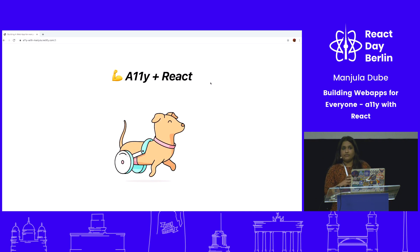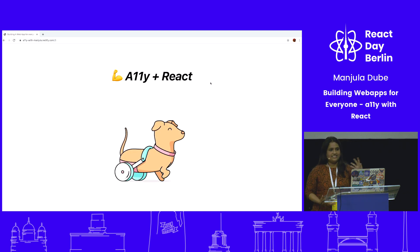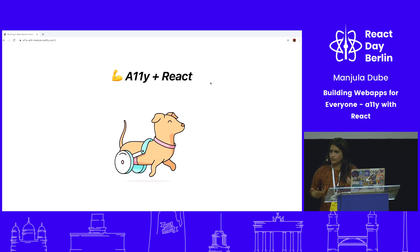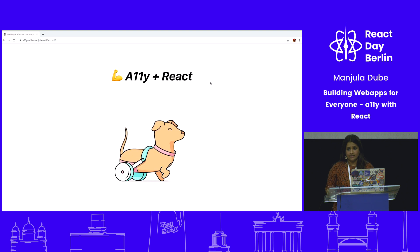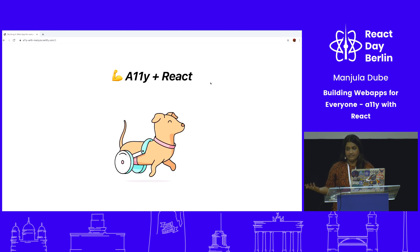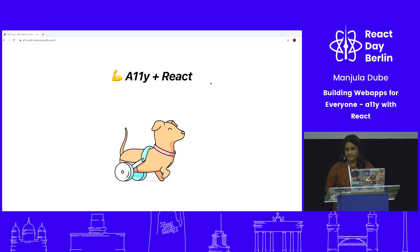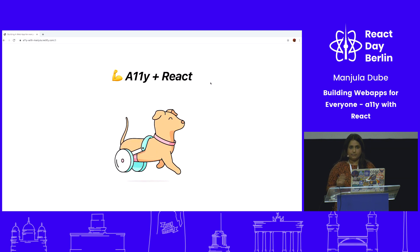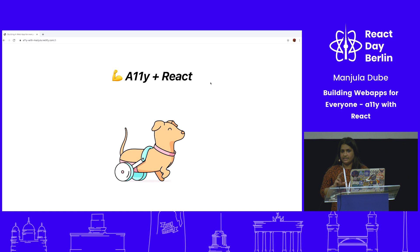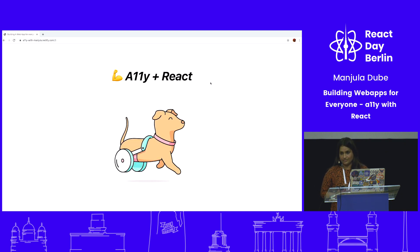Today I'm going to be talking about accessibility with React, which means I'll also give a few examples of how you should be building your components in React. Mostly what I'll be covering is screen readers. Most of the examples would be for screen readers — users who have low vision, maybe color contrast issues, or users who are fully blind.